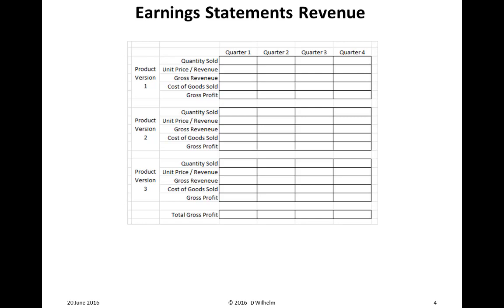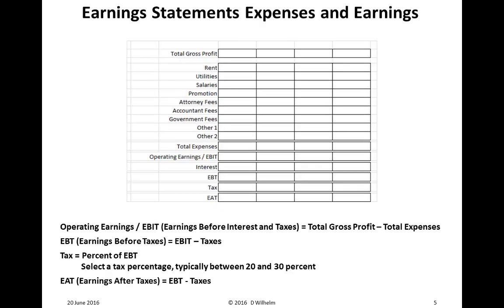That's the revenue part of the Earning Statement. The expenses and earnings part starts with the total gross profit from the previous page. Then sum the various expenses: rent, utilities, salaries, promotion, attorney's fees, accountant fees, government fees, and other items. Sum those to get total expenses. Total gross profit minus total expenses equals operating earnings, or earnings before interest and taxes.